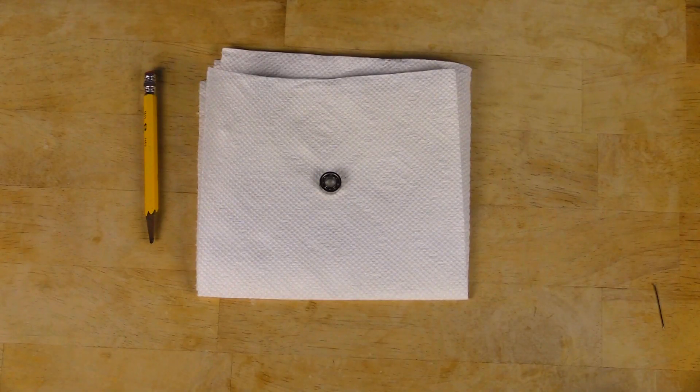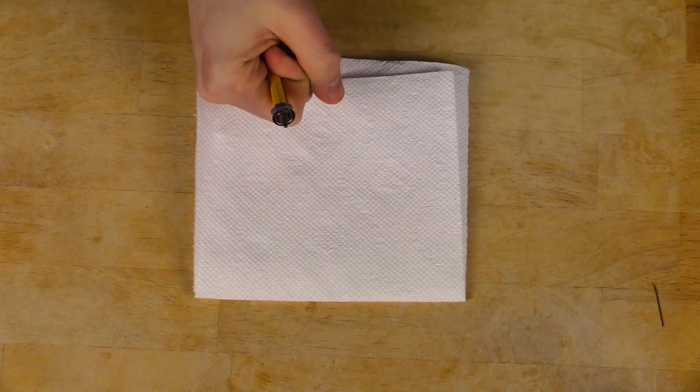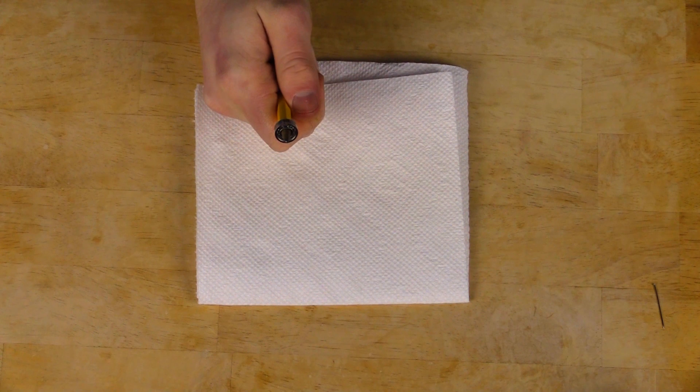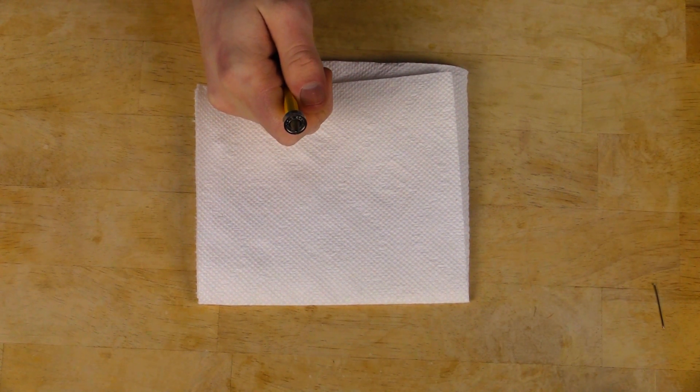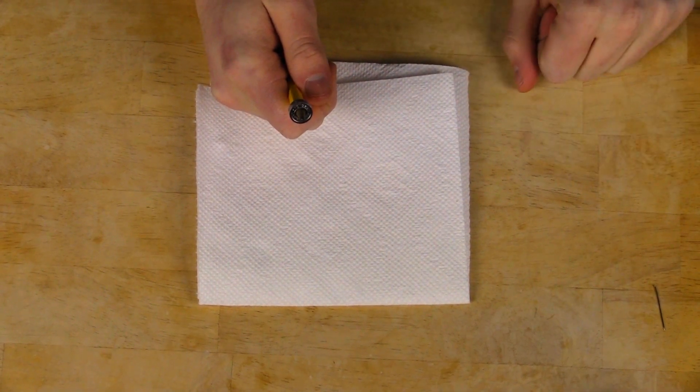So once your bearing is fully dry you just want to take it and put it on the end of a pencil and give it a nice flick. If your bearing is spinning smoothly then great job, you just cleaned your first bearing. But if it's still a little gritty you might want to try cleaning it again, sometimes the second time is the charm. And if that still doesn't work then we're going to have to resort to something a little bit more drastic.